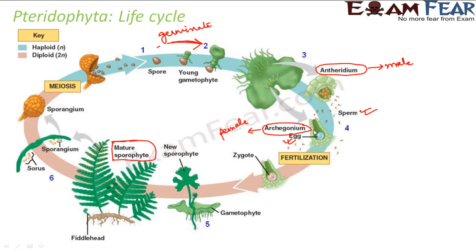The sperms come out from the male gametophyte and travel to the female gametophyte. Since they are on the same plant, transfer can happen internally or externally via agents like air or water. Once the sperm reaches the female gametophyte, fertilization takes place — fusion of egg and sperm — and as a result, a zygote is formed inside the female gametophyte.